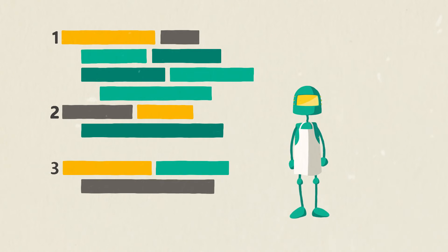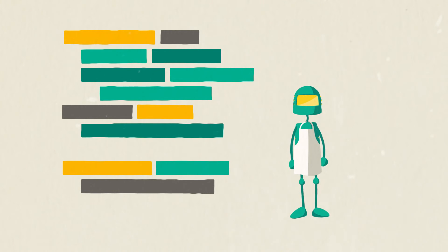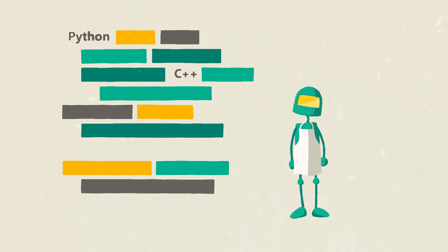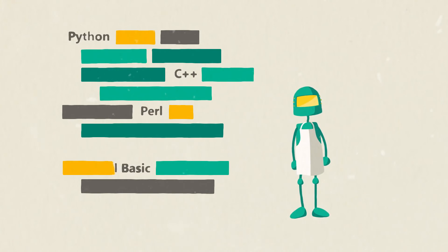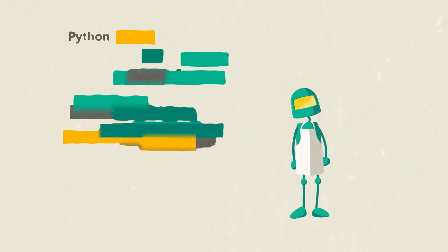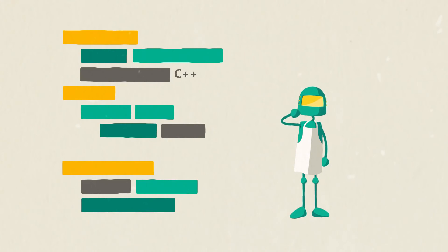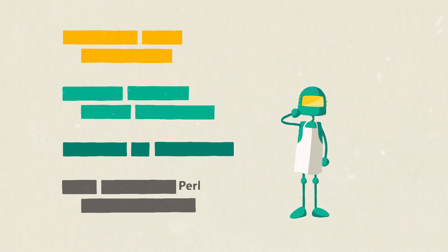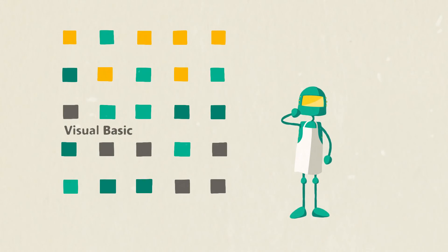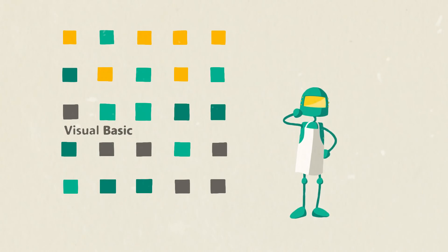And just like people in different parts of the world speak different languages, computers understand many different languages too, with names like Python, C++, Perl, and Visual Basic. They're all different in their own way, and similar to spoken languages, they share many of the same basic features.